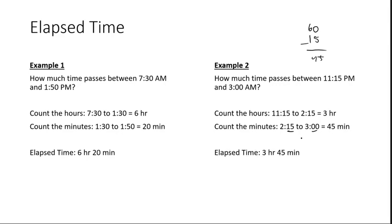You put the two times together. Figuring out elapsed time, you're basically just counting the hours and then the minutes.